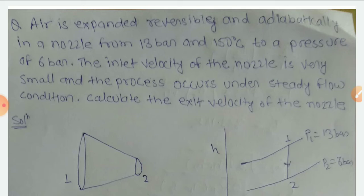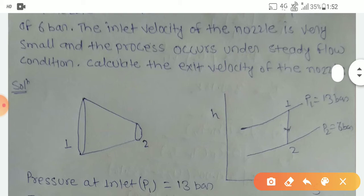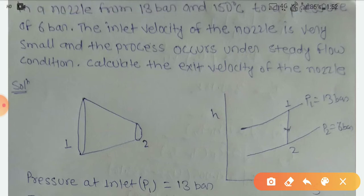In this problem, I am drawing an H-S diagram and here is a nozzle. At the entry point, its velocity is very small compared to exit velocity, and the nozzle expands. At inlet point, pressure is 13 bar; at outlet point, it's 6 bar, and temperature at inlet is 150 degrees Celsius.